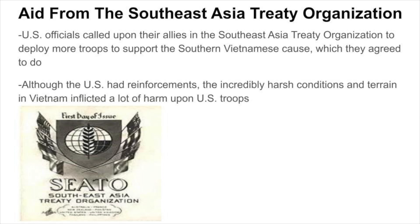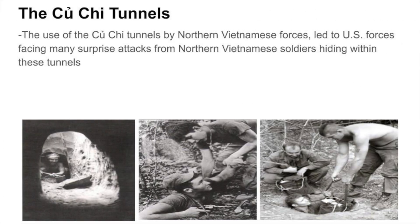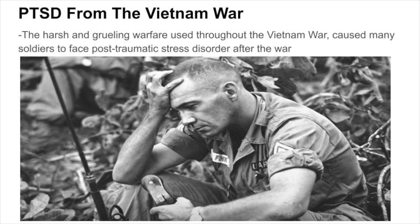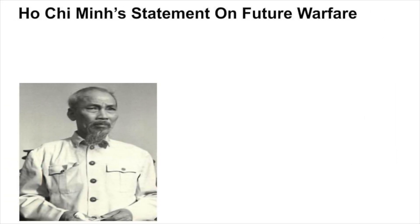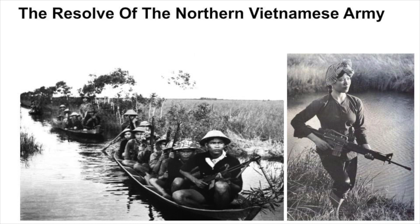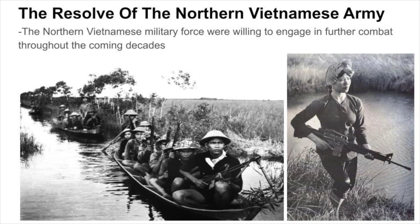Although the U.S. had reinforcements, the incredibly harsh conditions and terrain in Vietnam inflicted significant harm on U.S. troops. The use of the Cu Chi tunnels by Northern Vietnamese forces led to many surprise attacks, causing U.S. and Southern Vietnamese troops to train soldiers known as tunnel rats to locate enemy traps and hidden Northern Vietnamese soldiers within the tunnels. The harsh warfare caused many soldiers to face post-traumatic stress disorder after the war. In 1966, Ho Chi Minh stated: 'If they want to make war for 20 years, then we shall make war for 20 years. If they want to make peace, we shall make peace and invite them to tea afterwards,' highlighting the Northern Vietnamese military's willingness to engage in extended combat.